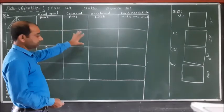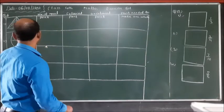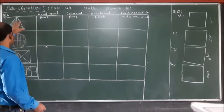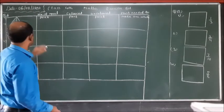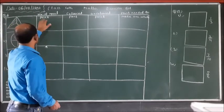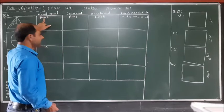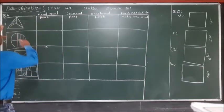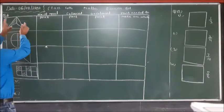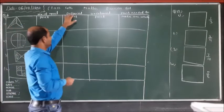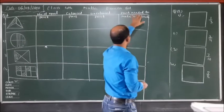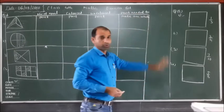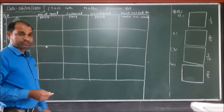In this table, some shapes are given — first shape, second shape, third shape, and fourth shape. The second part asks: how many total equal parts, colored parts, uncolored parts, and parts needed to make one whole.